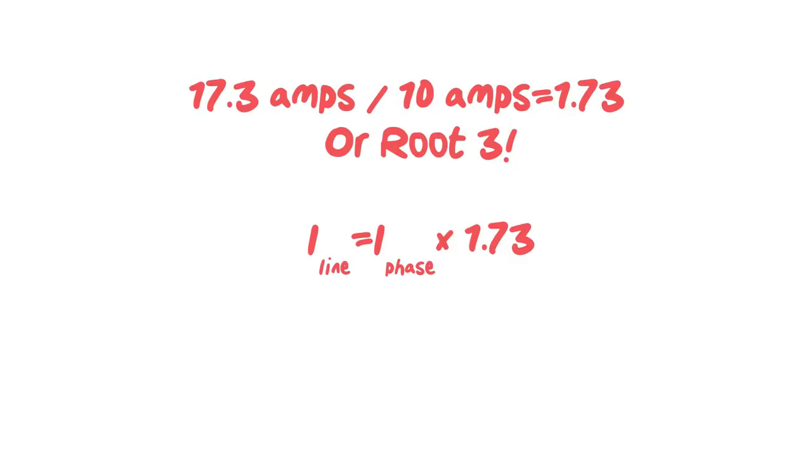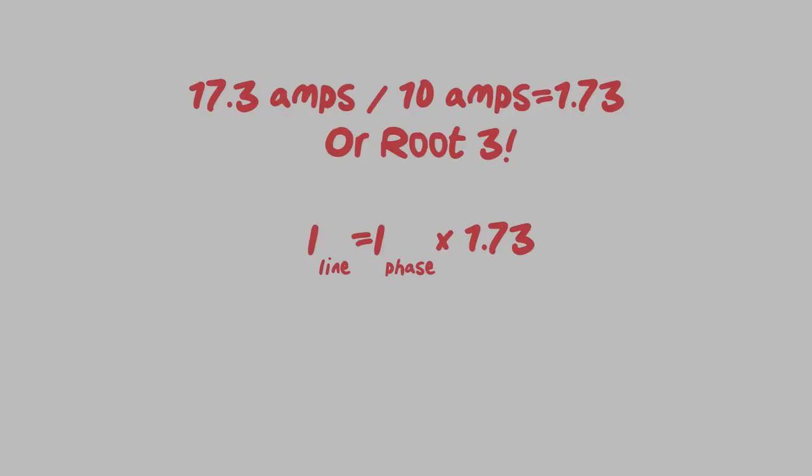So there you go. We have added all three of these up in every configuration to figure out what the A line was, the C line was and the B line was and it always worked out to be 17.3 amps. Which means if I take 17.3 amps divided by 10 amps, I get 1.73 or root 3. So for current in a delta configuration, I line is equal to I phase times 1.73. I could have used any different current. I could have used 246,333 amps per phase and then figured out what the line was based off of this here. So remember, if all that didn't make sense, at least if you can remember this, I line is equal to I phase times 1.73, you're going to be good.